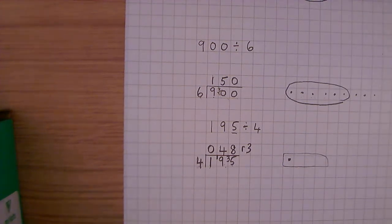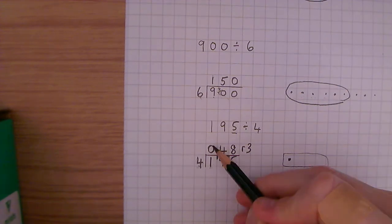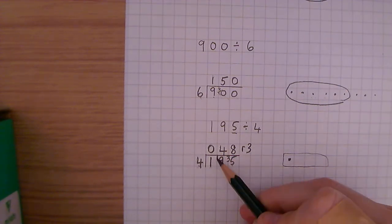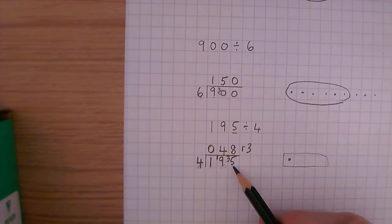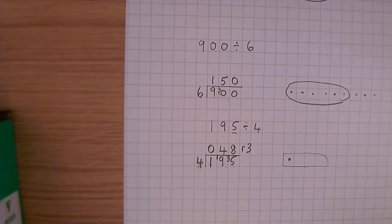Let's recap. How many 4's go into 1? 0. The 1 moves on to the shoulder here. How many 4's go into 19 is 4, remainder 3. How many 4's go into 35? 8, remainder 3. Final answer of 48, remainder 3.